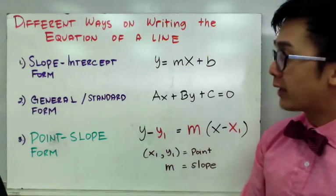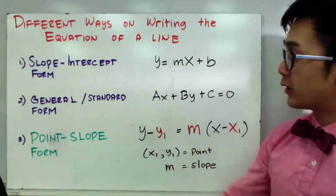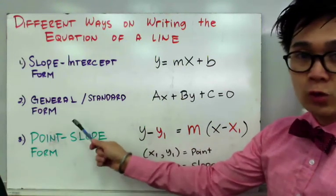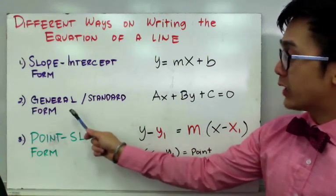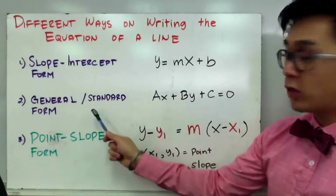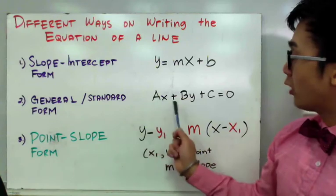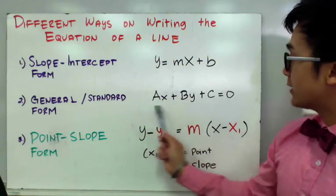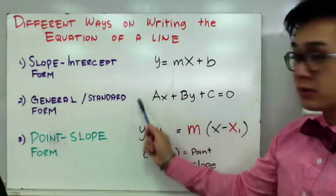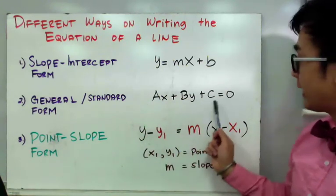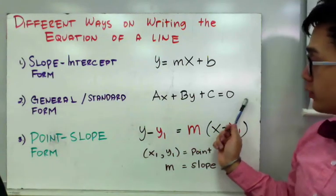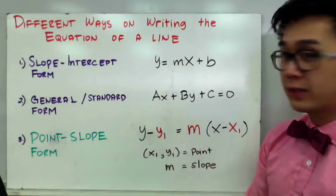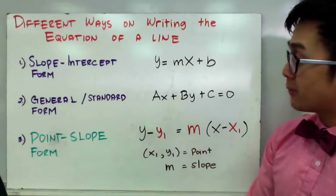We can also write an equation of a line using the general or the standard form. The general and the standard form is where all your variables and your constant are located on one side of the equation equal to 0. This is another form of a linear equation.